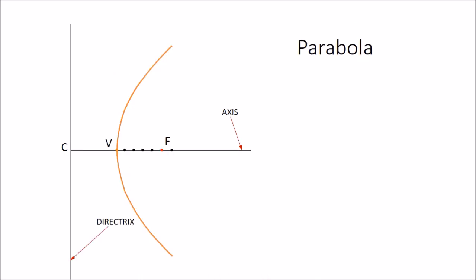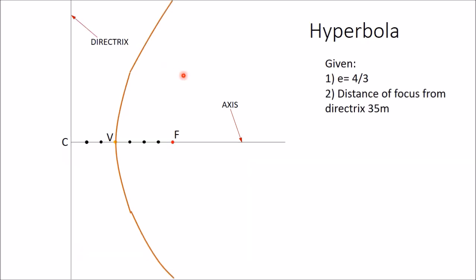Now suppose you want to draw tangent and normal at a point on a parabola. Take point P — the procedure is very similar to the one explained previously. Join P with F, then draw a line perpendicular to PF which intersects the directrix at point T. Join T with P and extend the line — this is your required tangent. At P, draw a line perpendicular to TP — that will be your required normal.